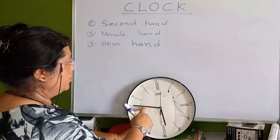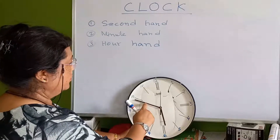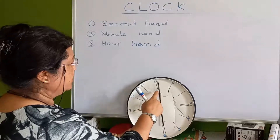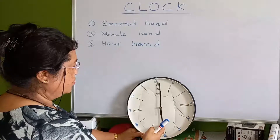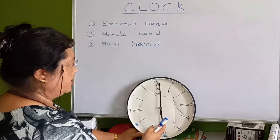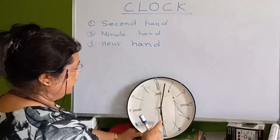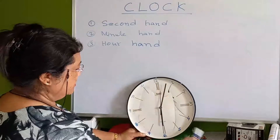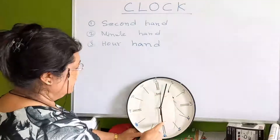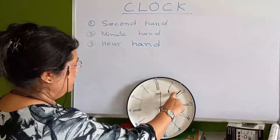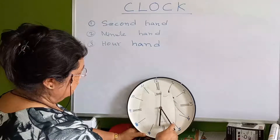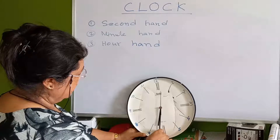Next we have the minute hand. It moves, but not as fast. When the minute hand moves, the hour hand also moves along with it. The hour hand alone will not move by itself — it only moves together with the minute hand.